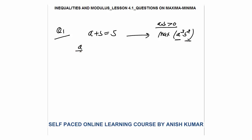I will divide a into three parts — a/3, a/3, a/3 — and b into two parts — b/2, b/2. If you see, the product will come out to a³ × b² times some constant. If you maximize this product, you are obviously maximizing a³b².